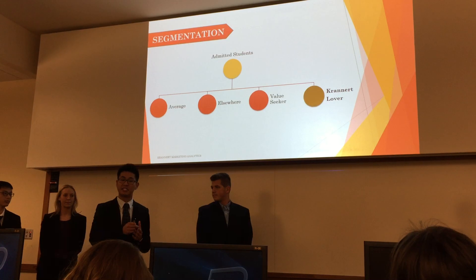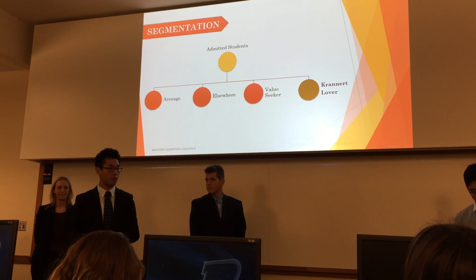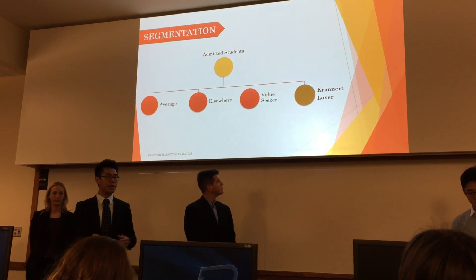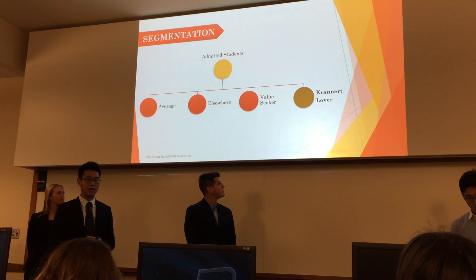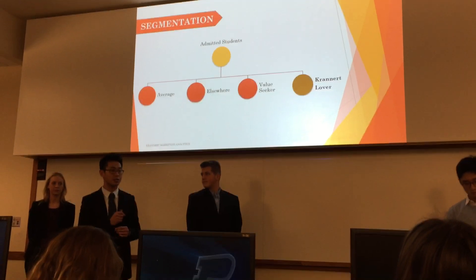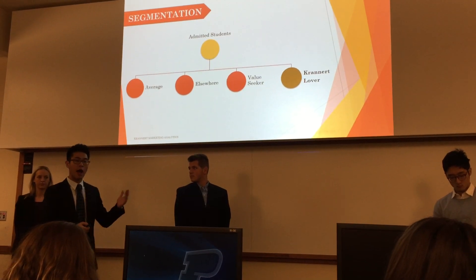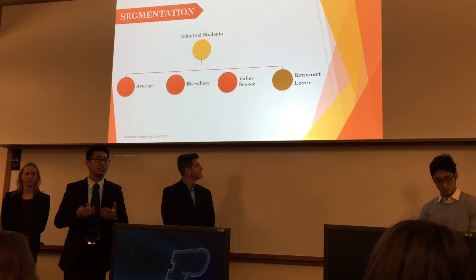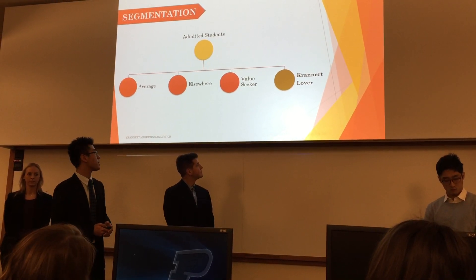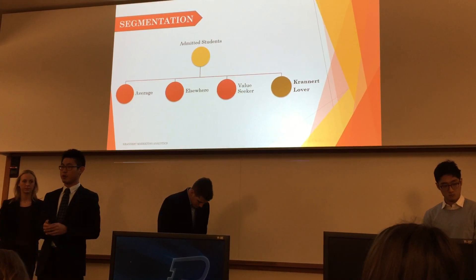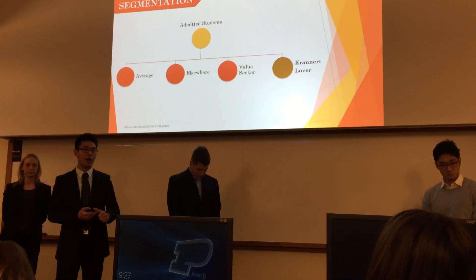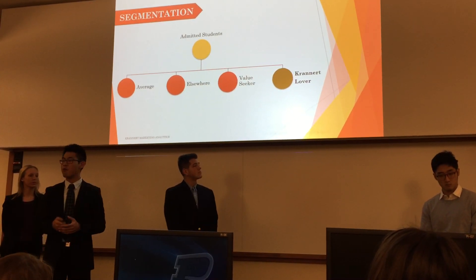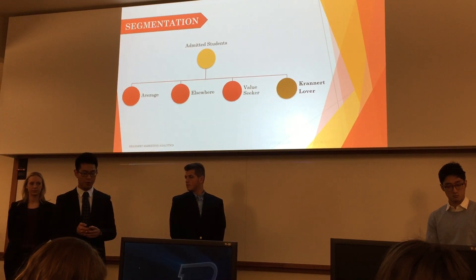Admitted students were asked a series of questions about different aspects of Krannert on a scale of one to five, where one means poor and five means excellent. The 'average' group rated Purdue on average across all questions. The 'elsewhere' group rated Purdue the lowest — we assume they're applying to Purdue as a backup. The 'value seeker' group rated Purdue highly except in financial aid and affordability. And 'Krannert lover' rated Krannert the highest compared to the other groups.